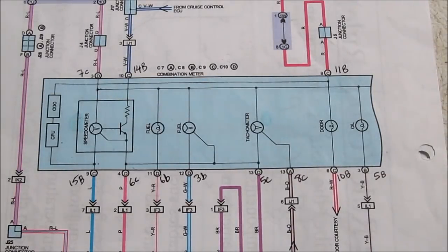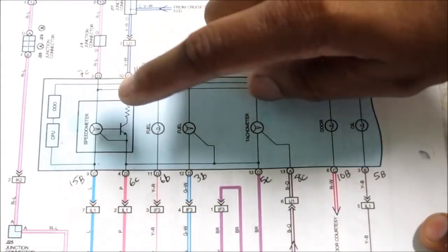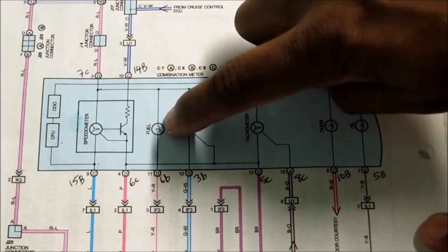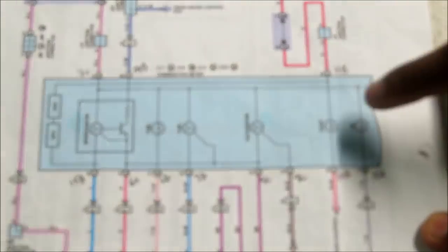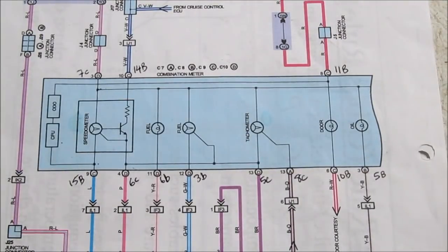Page one of the Lexus schematic goes through your odometer, speedometer, fuel light, fuel gauge, tachometer, your door light, and the oil light.